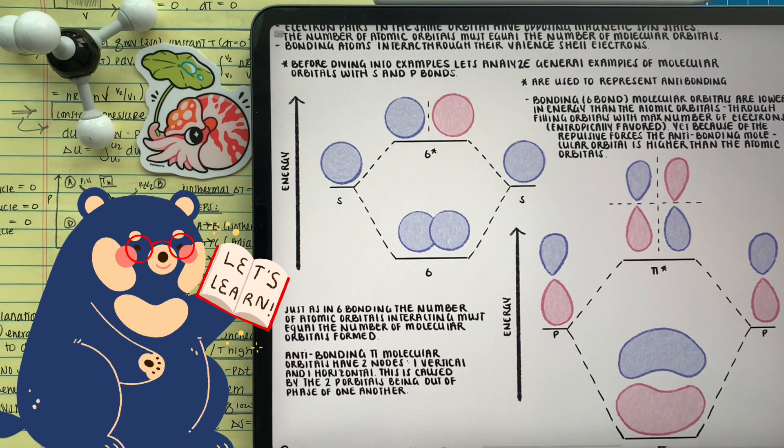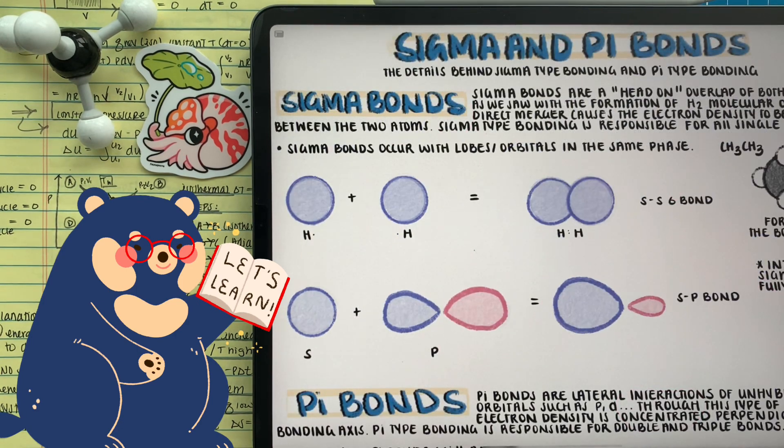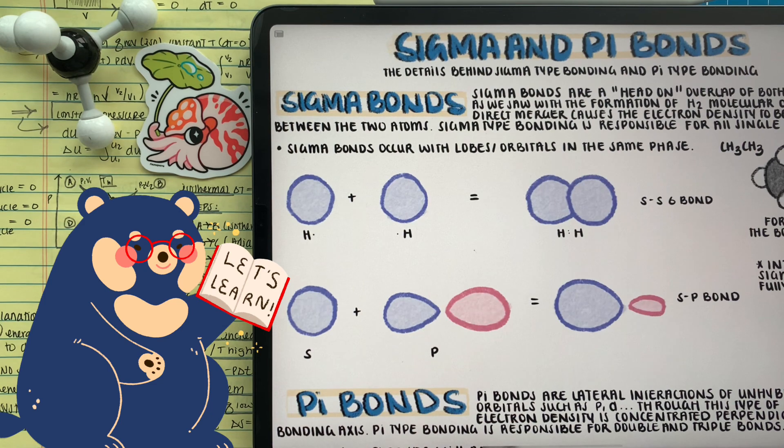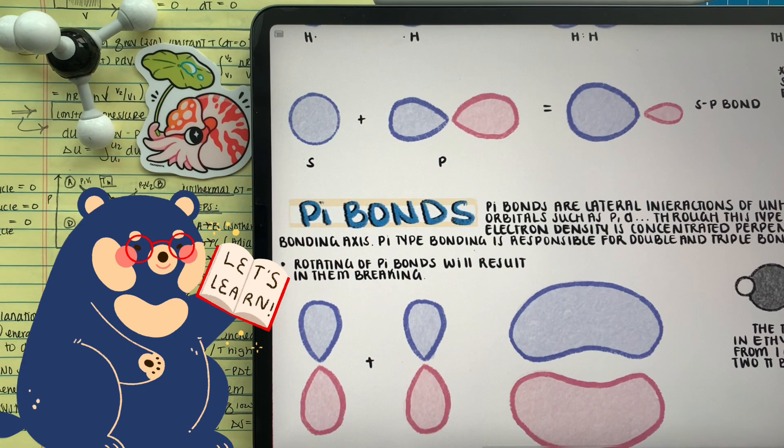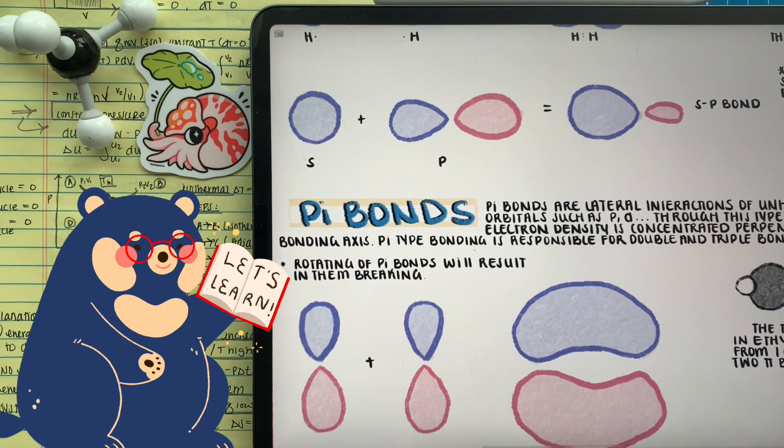These diagrams remind us of our two different types of bonding. Sigma bonding being that head-on collision of two atomic orbitals and their direct merger, where pi bonds are a lateral interaction where there might be a little weaker because the bond electron density is perpendicular to the bond axis.